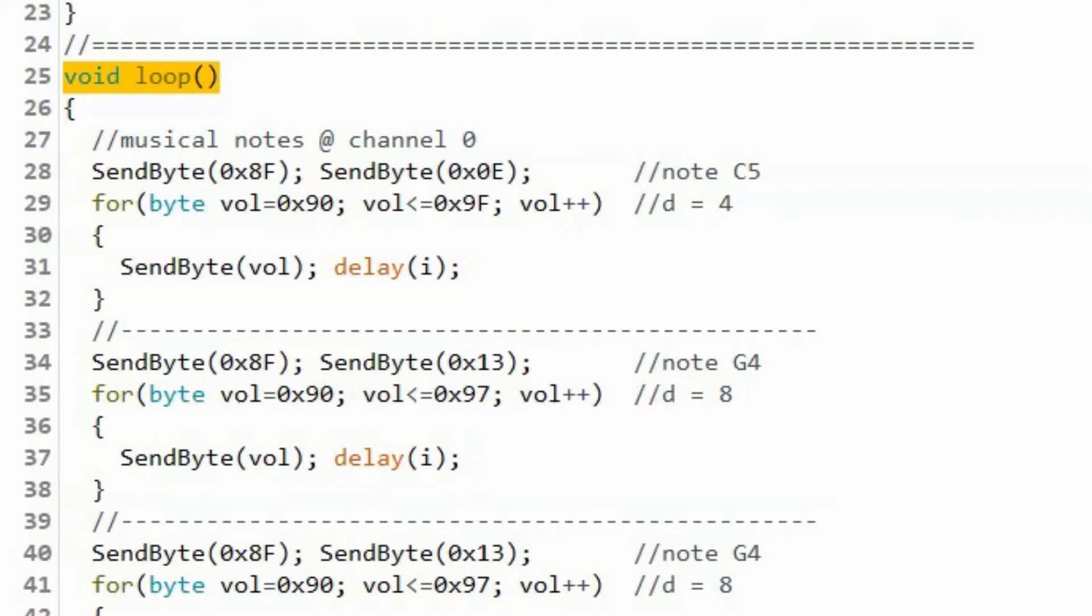A quick look at the C++ sketch. Within the loop function we want to play all of the notes on channel 0. So here we play the first note for a duration of 4, and then we play the second note for a duration of 8, and so on.